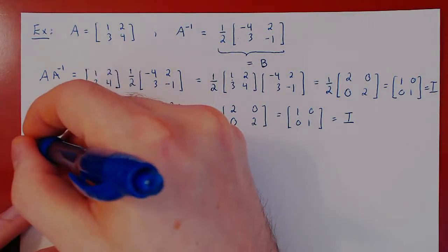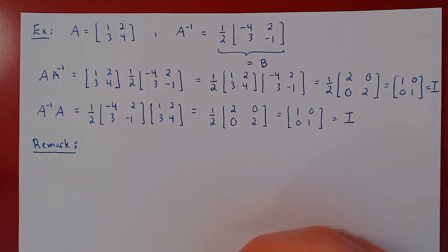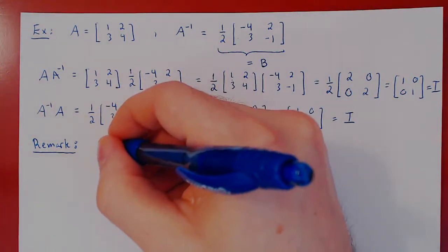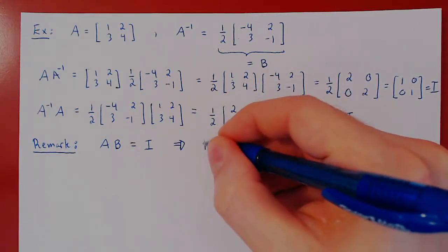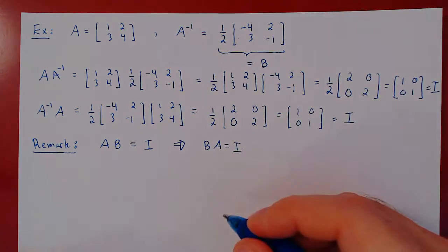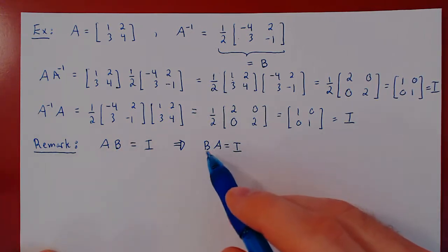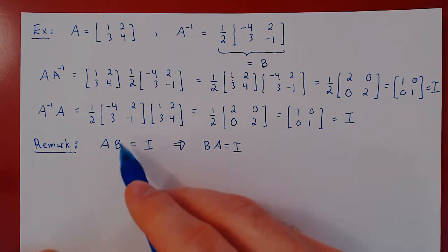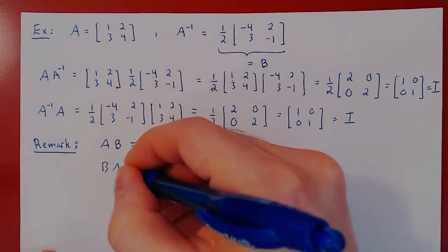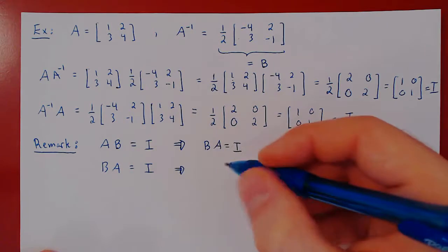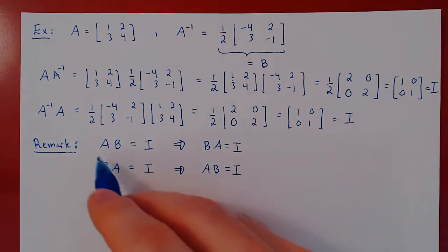Here is a remark. This is not obvious, and something we'll prove later on, but it's enough to verify one direction. If you have two square matrices A and B, and if A times B equals I, automatically the implication is that B times A will also equal I. Think of why this is not obvious — because we know in general, multiplication does not commute, and so A times B is not always equal to B times A. But if the product of A and B is I, the product of B and A will automatically be I. So when checking whether or not a matrix is the inverse of another, it's enough to perform just one multiplication.